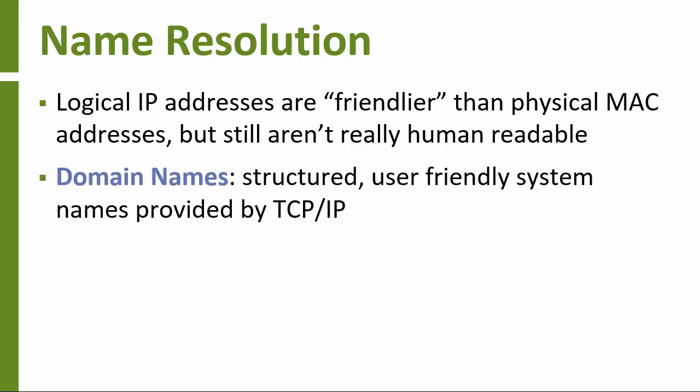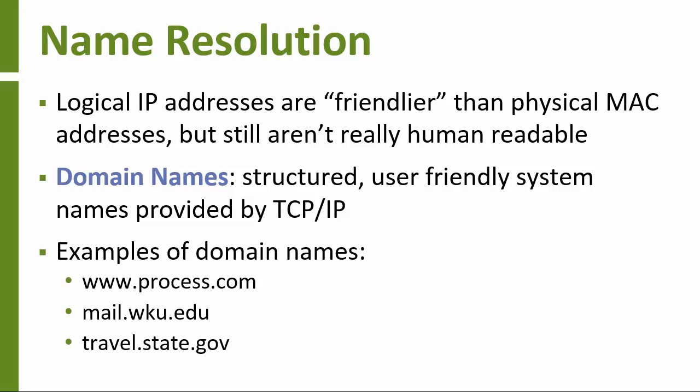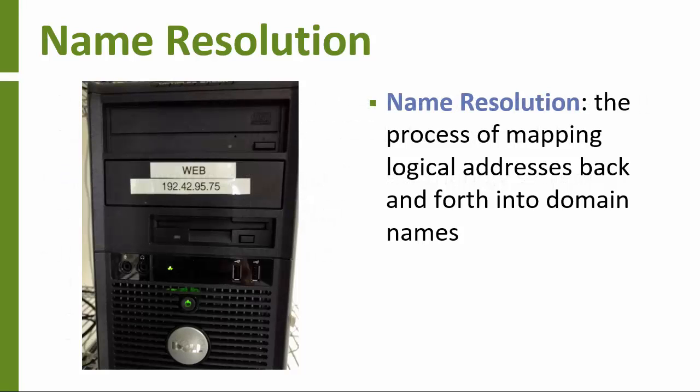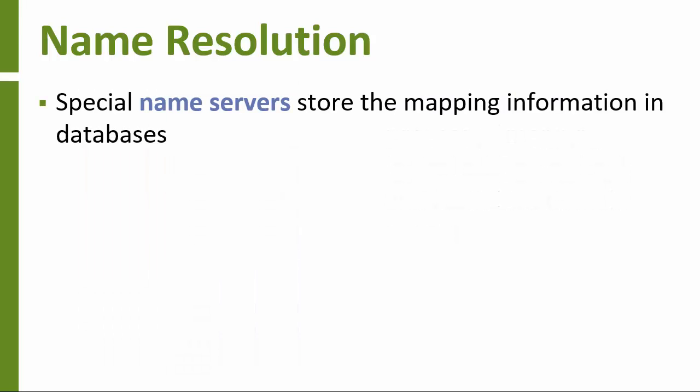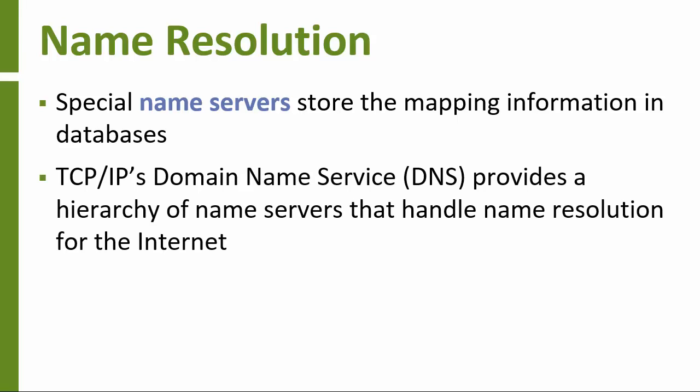To solve the problem, TCP-IP provides a structure of human-readable system names called domain names. You see these domain names everywhere: www.process.com, mail.wku.edu, travel.state.gov, and so on. The process of mapping a logical IP address back and forth to a domain name is called name resolution. Special servers called name servers store database tables that provide the mapping of numbers and names. TCP-IP's domain name service system, or DNS, sets up a hierarchy of name servers that can handle all of the back and forth mapping for the entire internet.